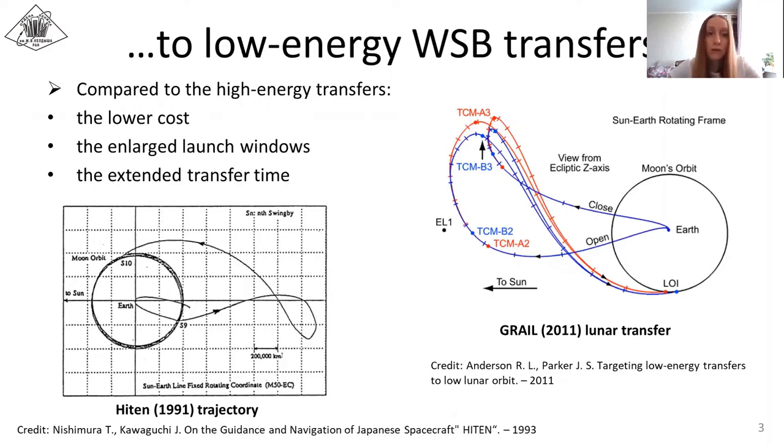However, the flight time is much longer than for traditional high energy transfers. Sun-perturbed low energy transfers are called weak stability boundaries or WSB transfers. Such trajectory first departs far away from the Earth-Moon system, where the sun's gravity pulls the perigee, and after that a spacecraft heads towards the Moon to be captured ballistically.